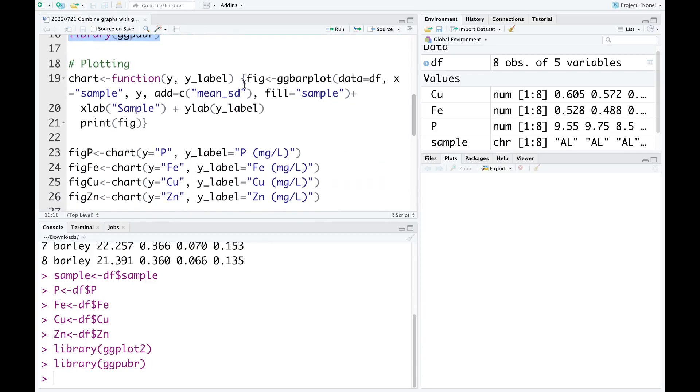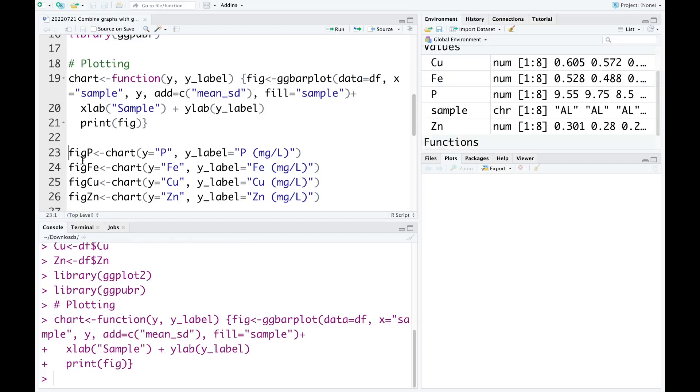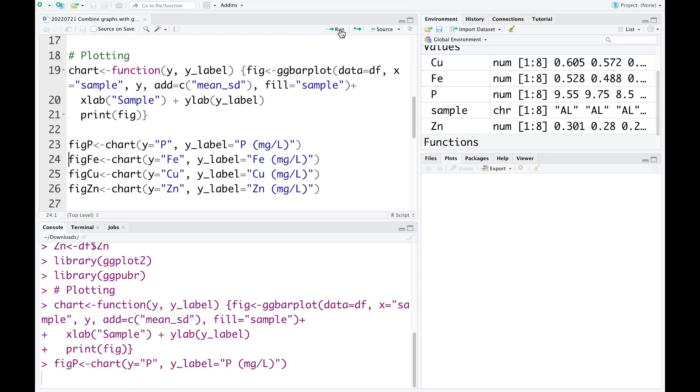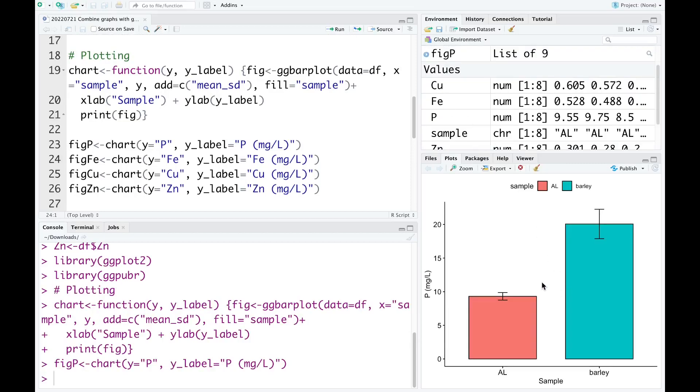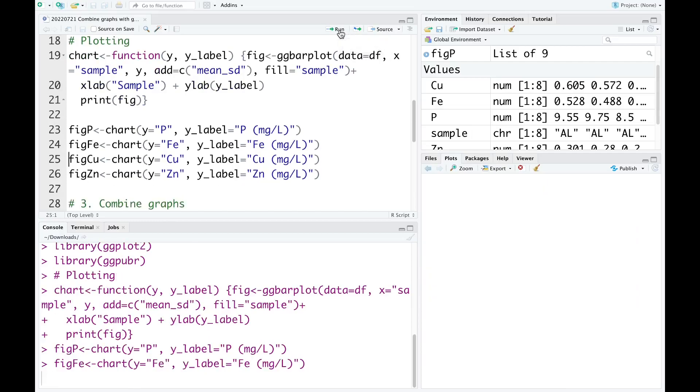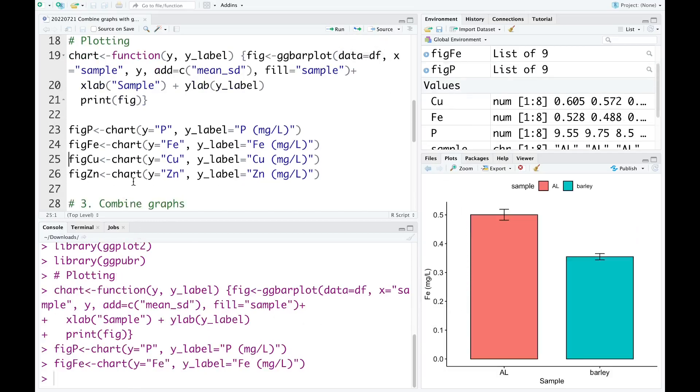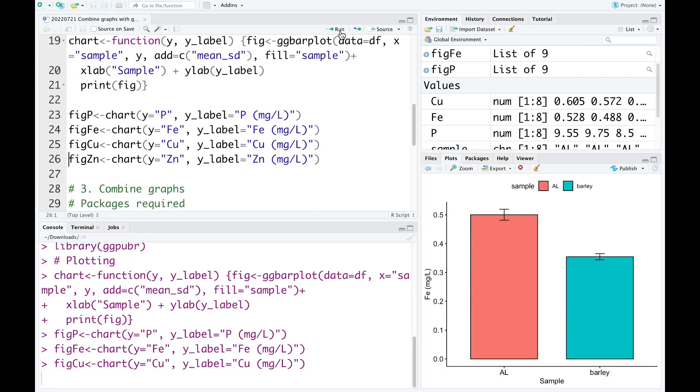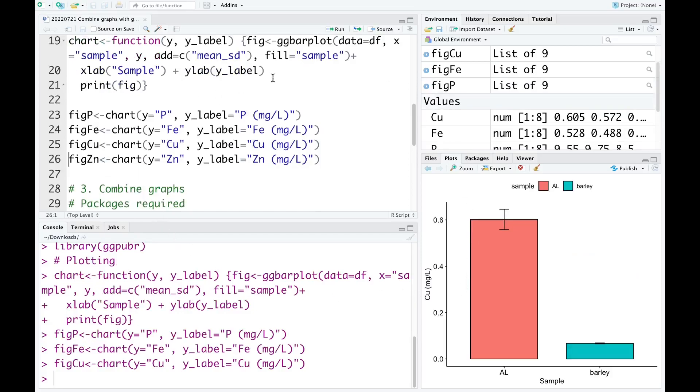In this case, I use ggbarplot to plot the bar plots and I use a function to make the code shorter. Now I run this code. And next, the third graph of phosphorus. This is phosphorus. The next one is for iron, then copper, and the last one is zinc.